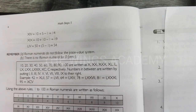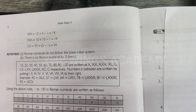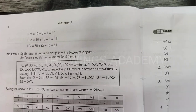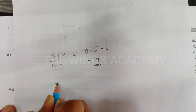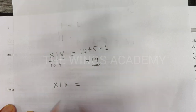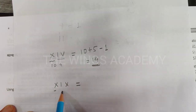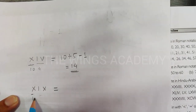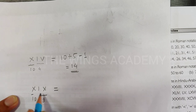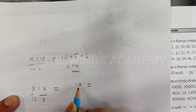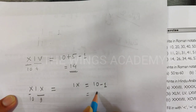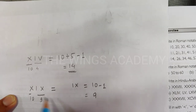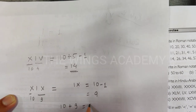Another example: XIX. We know IX has value 9 and X has value 10. Since IX is smaller than X, and a smaller value is placed after the first X, by Rule 2 we add: X plus IX equals 10 plus 9, which is equal to 19. Clear?